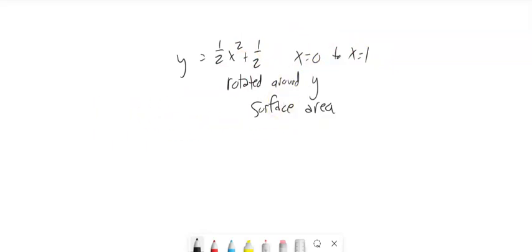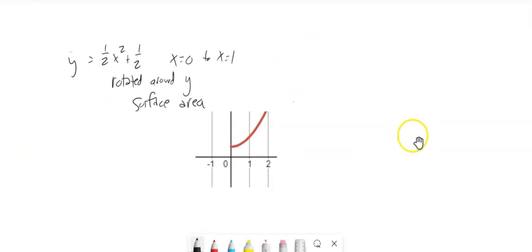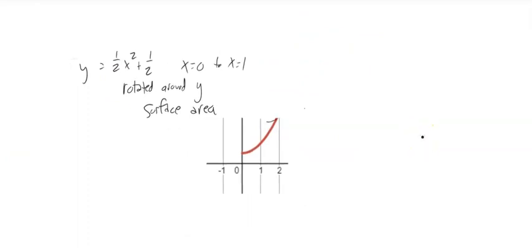So let me grab something from Desmos here. So there's my shape. I rotate that around y. Something that just looks like a bowl. And I want that surface area.